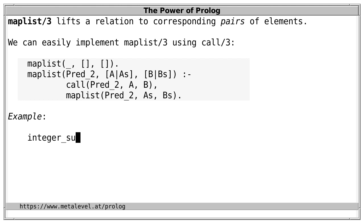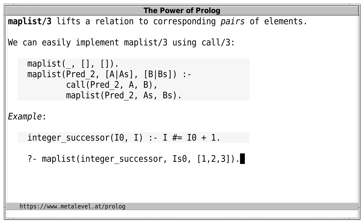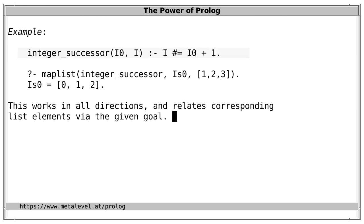So for example, suppose we have a predicate integer_successor relating an integer to its successor. Then we can use maplist/3 to relate lists of integers to their respective successors. And of course, since this is a general relation, we can also use the same predicate to relate lists of integers to their respective predecessors, as in this case. So,